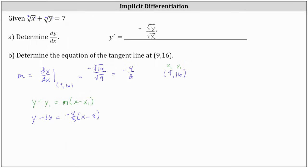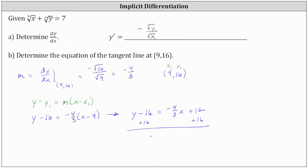This is the equation of the tangent line in point slope form. Let's solve for y and write the equation in slope-intercept form. We distribute negative 4 thirds on the right, which gives us y minus 16 equals negative 4 thirds x. Then negative 4 thirds times negative 9 equals positive 12, giving us plus 12. Adding 16 to both sides, we get y equals negative 4 thirds x plus 28.